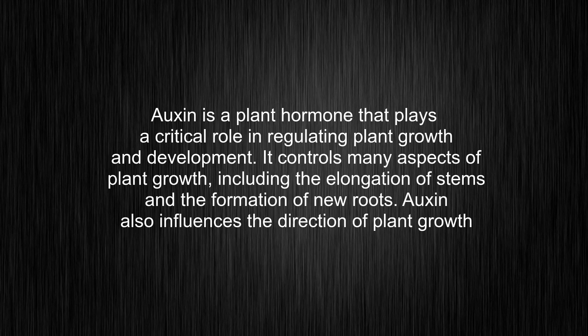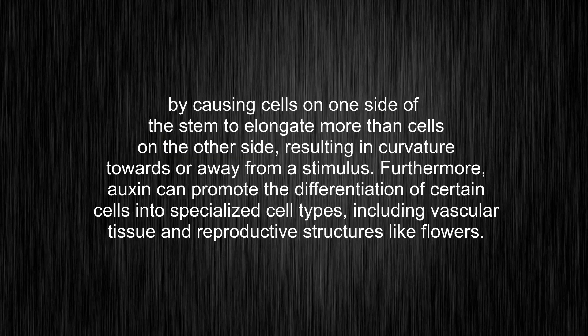It controls many aspects of plant growth, including the elongation of stems and the formation of new roots. Auxin also influences the direction of plant growth by causing cells on one side of the stem to elongate more than cells on the other side, resulting in curvature towards or away from a stimulus. Furthermore, auxin can promote the differentiation of certain cells into specialized cell types, including vascular tissue and reproductive structures like flowers.